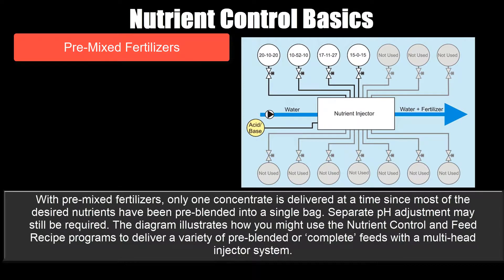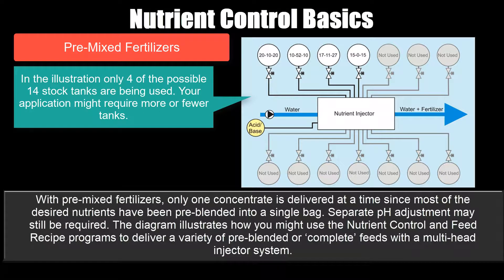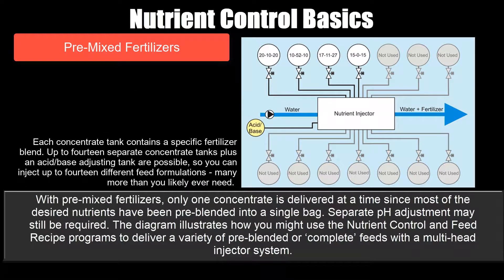With pre-mixed fertilizers, only one concentrate is delivered at a time since most or all of the desired nutrients have been pre-blended into a single bag. Separate pH adjustment may still be required. The following diagram illustrates how you might use the nutrient control and feed recipe programs to deliver a variety of pre-blended or complete feeds with a multi-head injector system. Note that in the illustration, only four of the possible 14 stock tanks are being used — your application might require more or fewer. Each concentrate tank contains a specific fertilizer blend. The nutrient control program supports up to 14 separate concentrate tanks plus an acid and base adjusting tank, allowing up to 14 different feed formulations.